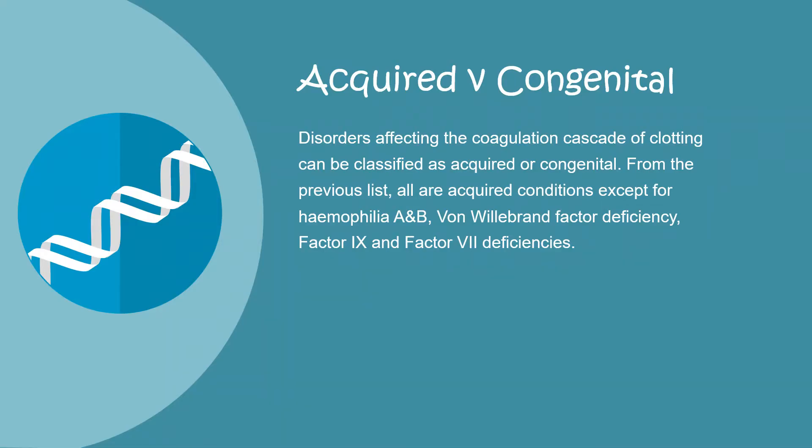Let's assess which coagulation pathway disorders are acquired versus congenital. From the previous list, all are acquired conditions except for haemophilia A and B, von Willebrand disease (which is a von Willebrand factor deficiency), factor nine deficiency, and factor seven deficiency.